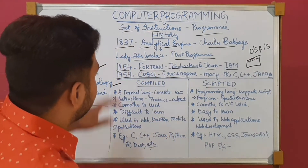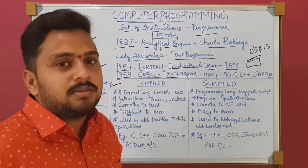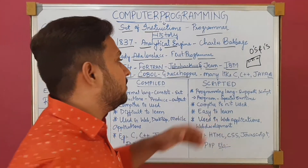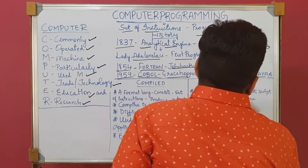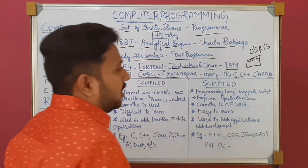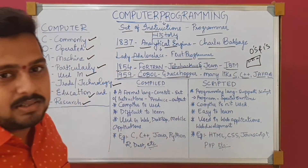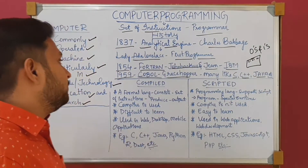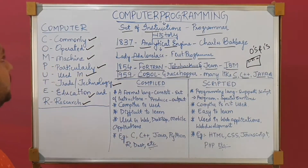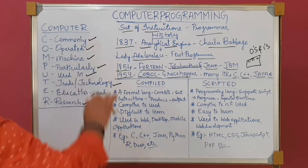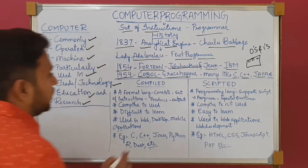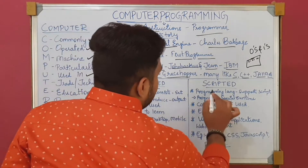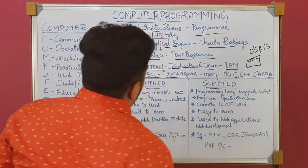After these two programming languages, many programming languages were invented, like C, C++, Java, Python, R, Dart, etc. In computer programming, we have two types: one is compiled programming and the other is scripted programming.